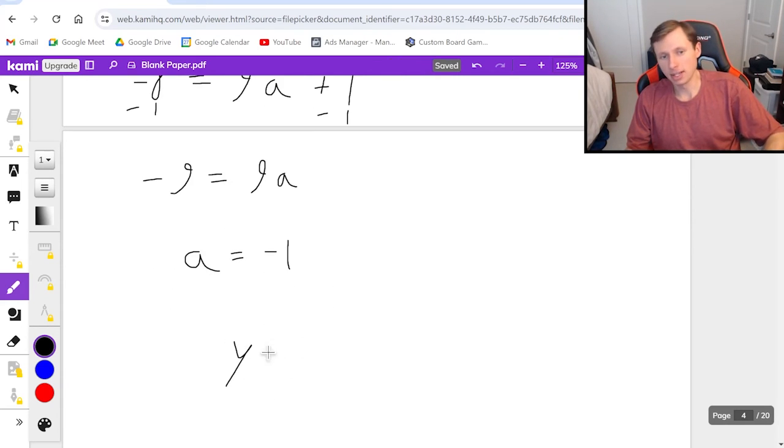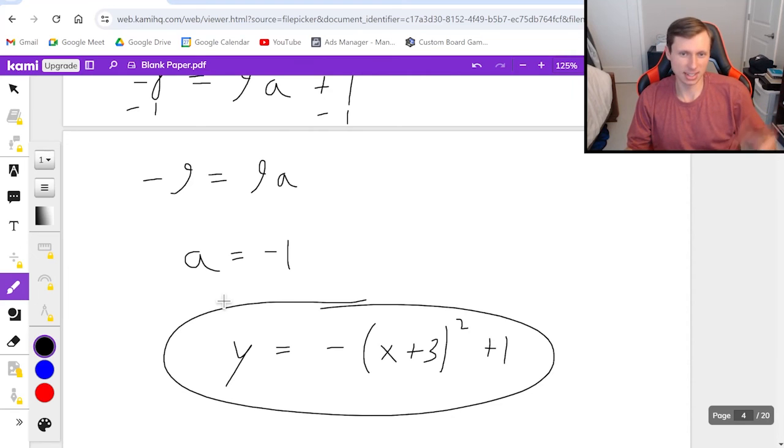So my final answer is y equals negative. If it's negative 1, I don't need to say negative 1. I can just say negative. And then parenthesis, x plus 3 squared plus 1. Done. Final answer.